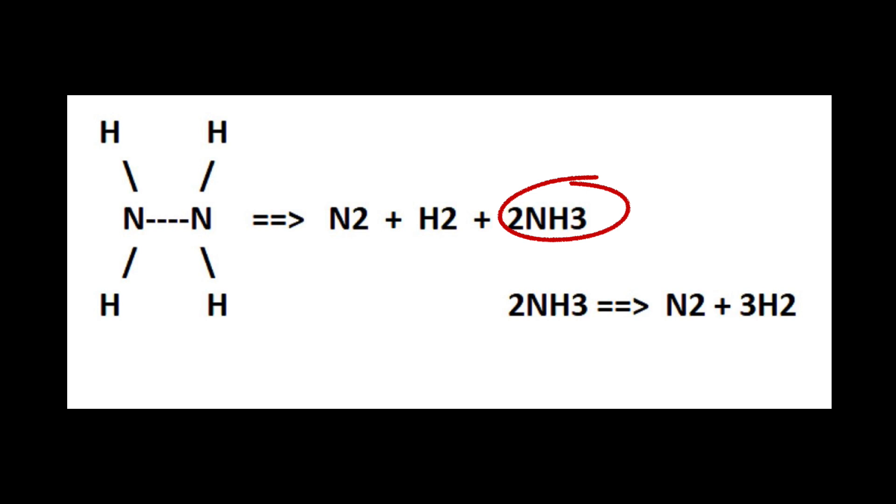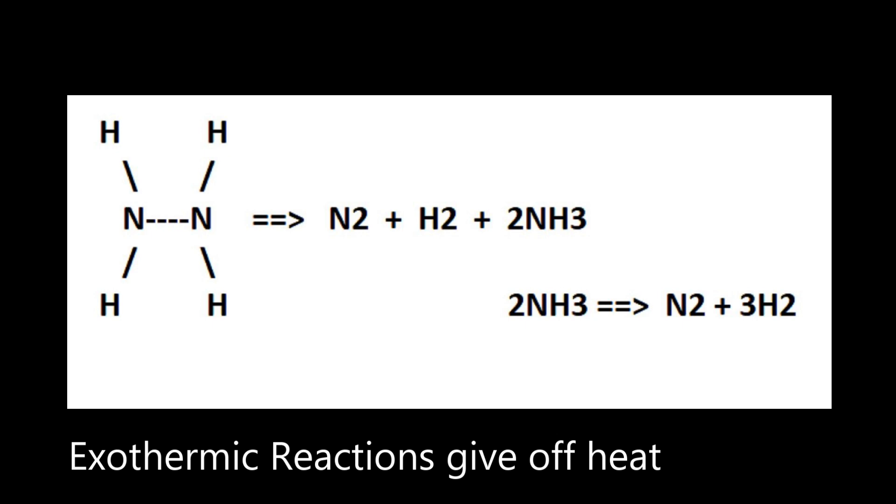This reaction forms nitrogen gas and hydrogen gas. It will also form some ammonia and nitrogen gas. The first two reactions are very exothermic and give off a lot of heat. Then the ammonia and remaining hydrazine will break down into nitrogen and hydrogen gas. This is actually an endothermic reaction and absorbs a little bit of that heat. So hydrazine can break down into nitrogen gas, hydrogen gas, or ammonia. The ammonia will then break down into hydrogen and nitrogen gas by combining with more hydrazine.